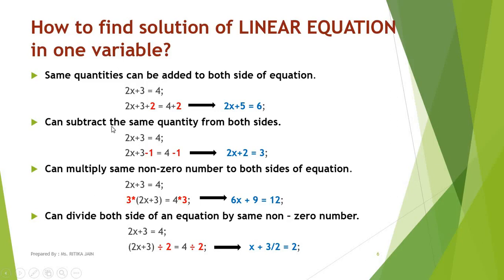Second step: you can subtract the same quantity from both sides. I have subtracted 1 from both sides of the same question, so the new equation becomes 2x plus 2 equals 3, which gives the same value of x. Third step: you can multiply both sides by the same non-zero number. Multiplying both sides by 3 gives 6x plus 9 equals 12 — again giving the same answer for x.